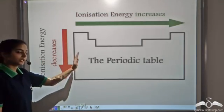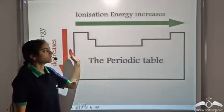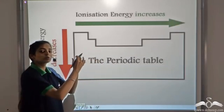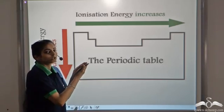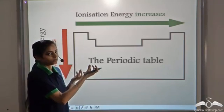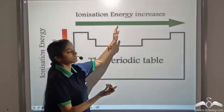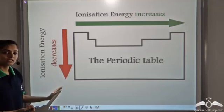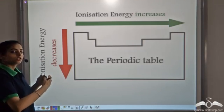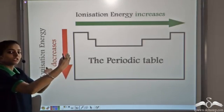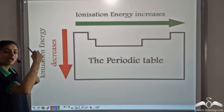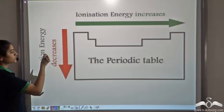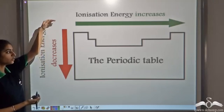To summarize: in the periodic table, when we move from left to right, the atomic size decreases. The decrease in atomic size brings the outermost shell close to the nucleus, so it becomes difficult to remove the electrons — greater energy is required, and the ionization energy increases. When we move from top to bottom, the atomic size increases, which tends to loosen the electrons away from the nucleus. Lesser energy is required to remove them, so the ionization energy on moving from top to bottom decreases.